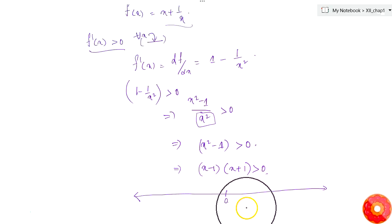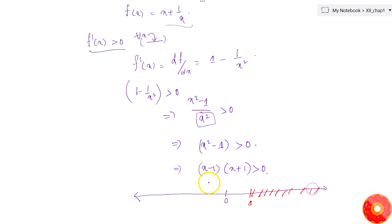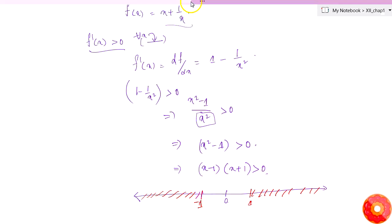From the number line, if x is greater than 1, the expression is greater than 0, so f is strictly increasing. If x is less than -1, it is again strictly increasing. So except for the region (-1, 1), everywhere else the function is strictly increasing.